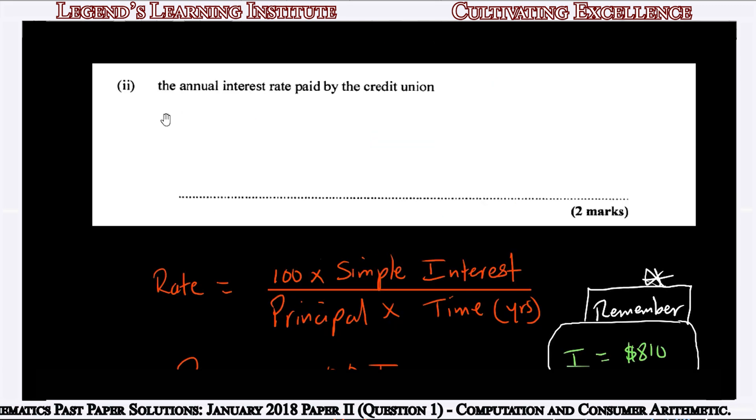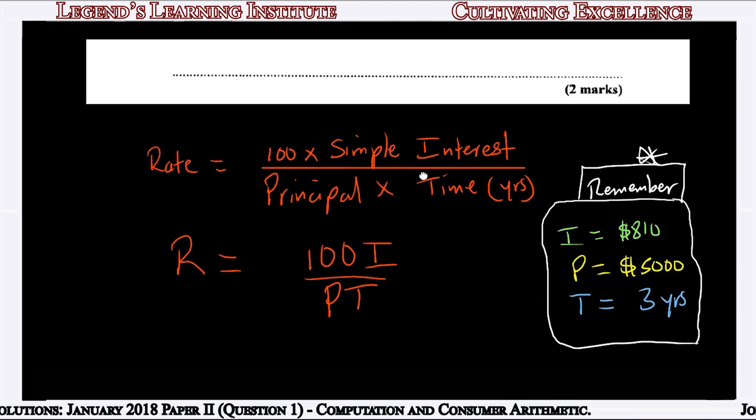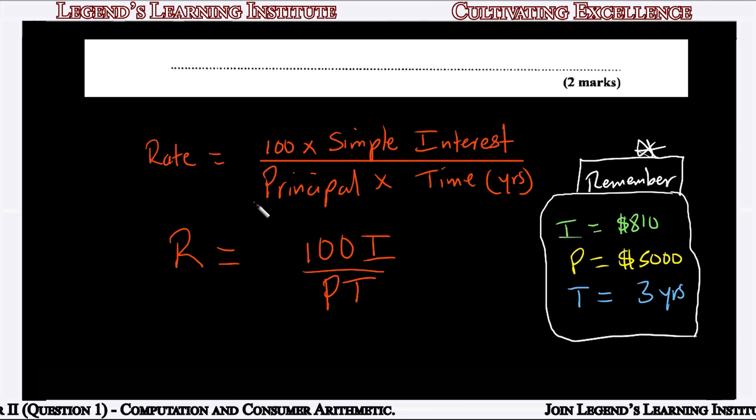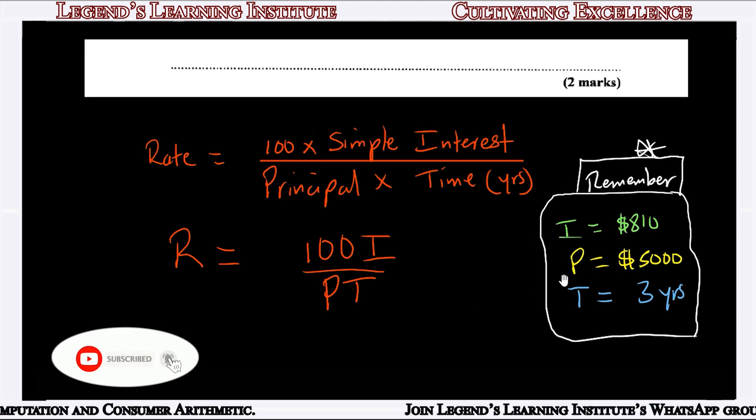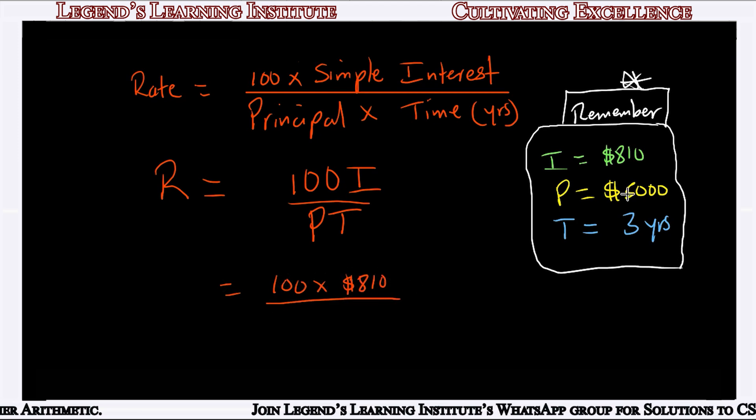For C(ii), we calculate the annual interest rate paid by the credit union. The formula for calculating the rate for simple interest is: Rate equals 100 multiplied by the simple interest divided by the principal times the time in years. Or R = 100I/(PT). The simple interest is $810 from part C(i).